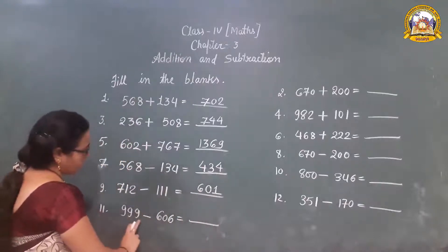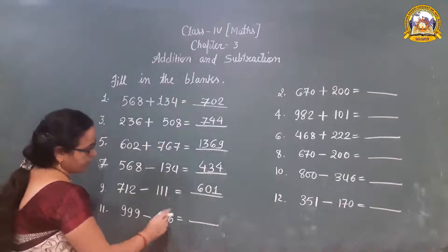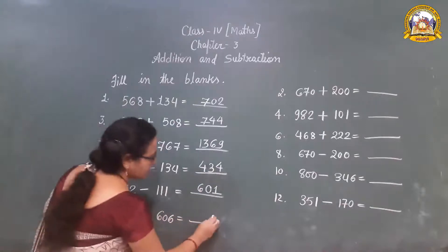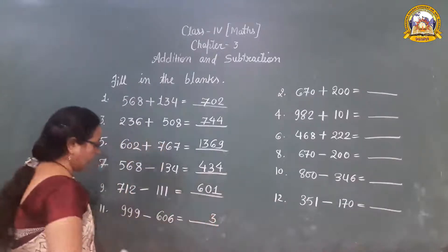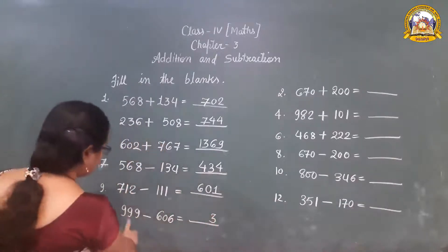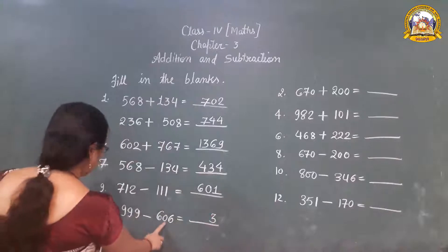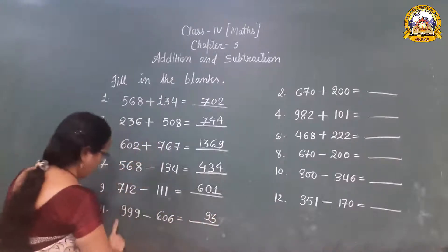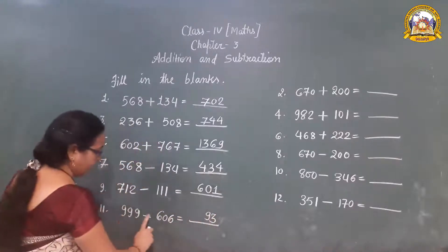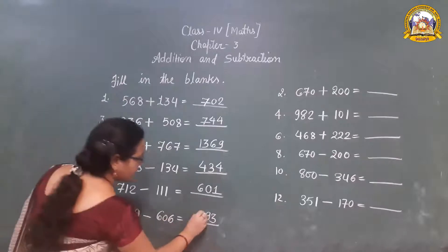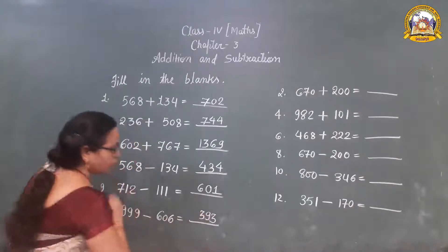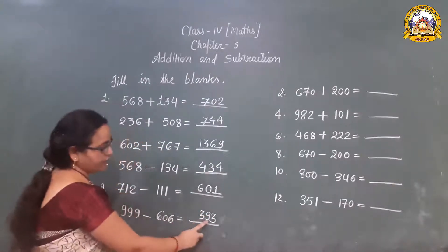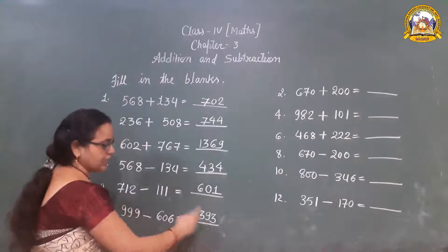Now question number 11. 9 minus 6 is 3. Then 9 minus 0 is 9. And 9 minus 6 is 3. So what is the answer? Our answer is 393.